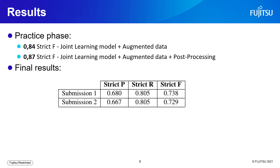During the practice phase, we obtained strict F1 scores of 0.84 with our joint learning model fine-tuned with augmented data, and 0.87 with our joint learning model using augmented data and post-processing. For the final results submitted, we submitted two sets of predicted data. Submission 1 consisted of joint learning model predictions with our post-processing and cleaning, and submission 2 consisted of joint learning model predictions without any post-processing. The highest final result achieved was a strict F-score of 0.738.